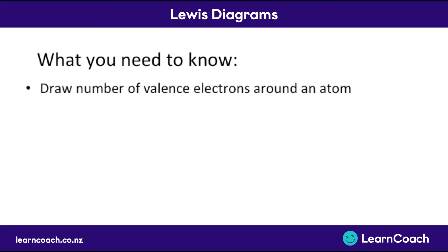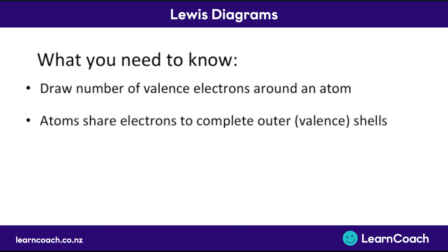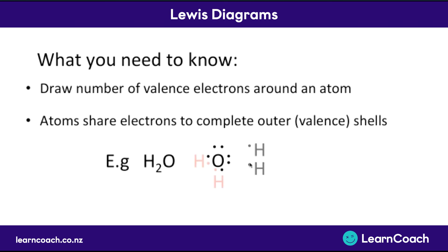So what you need to know from this video: first, you draw the number of valence electrons as dots around an atom, and we do it in pairs. Second, atoms share electrons to complete their outer shells. For example, in H2O, the hydrogens each have one outer electron and they share electrons to complete their valence shells. 'Valence' just means the outer shell — same meaning.